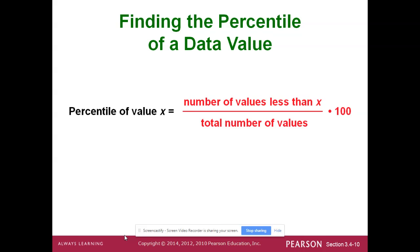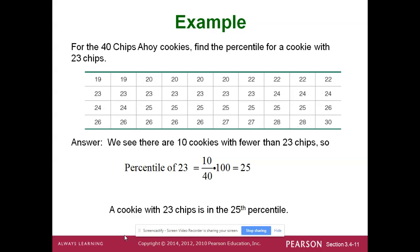So the percentile formula is: number of values less than x, divided by total number of values, times 100. Here's an example using Chips Ahoy cookies. We want to find the percentile for a cookie with 23 chips. We count and find there are 10 cookies with fewer than 23 chips out of 40 total cookies. So 10 over 40 times 100 equals the 25th percentile. A cookie with 23 chips is at the 25th percentile. 23 chocolate chips — I never stopped to count them.